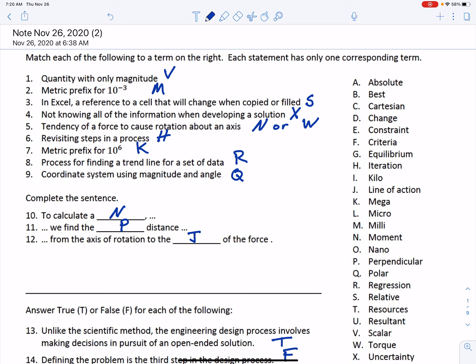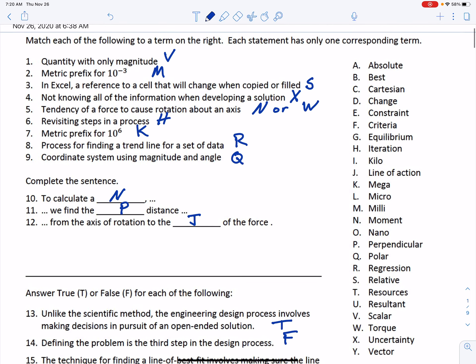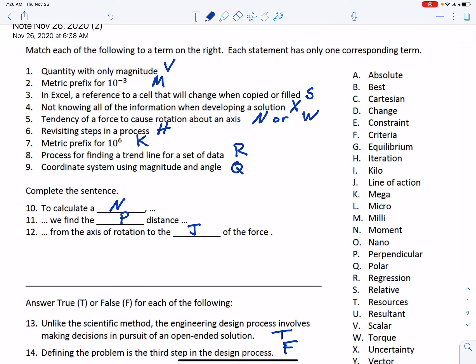Okay, this video is to review some of the problems from exam number one. So first of all, let's go through the multiple choice matching kind of problems that show up in the first part of the exam. Starting with number one: quantity with only a magnitude. You check the list and you see item V is scalar, so that's the answer. I think that one's pretty self-explanatory.